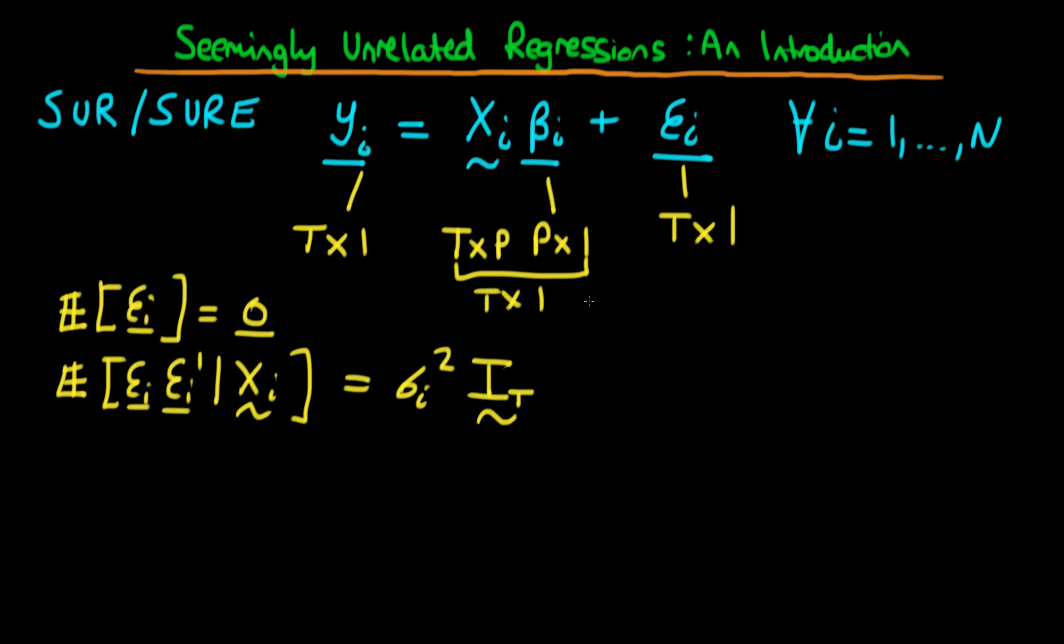But what we're gonna assume in this particular setup is that between individuals, there is a degree of contemporaneous correlation. So in other words, the expectation of E_i_t times E_j_t, given that we have both of their individuals' independent variables,